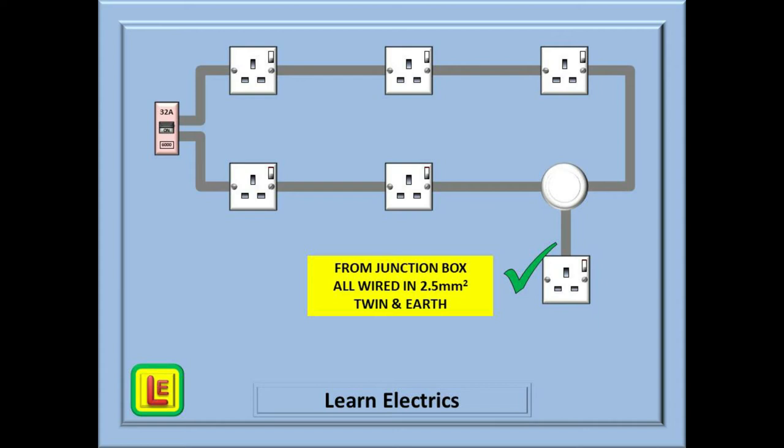We could have a junction box on the ring that supplies a socket. As long as the cable that connects the socket to the junction box is 2.5mm then all is okay. In fact, we could do this to every socket or junction box that is actually part of the ring. A single accessory can be attached to each accessory on the ring if the rules are followed. A double socket is classed as a single accessory as it is still only one piece of plastic. But two single sockets next to each other are not allowed. Unfortunately, those are the rules.